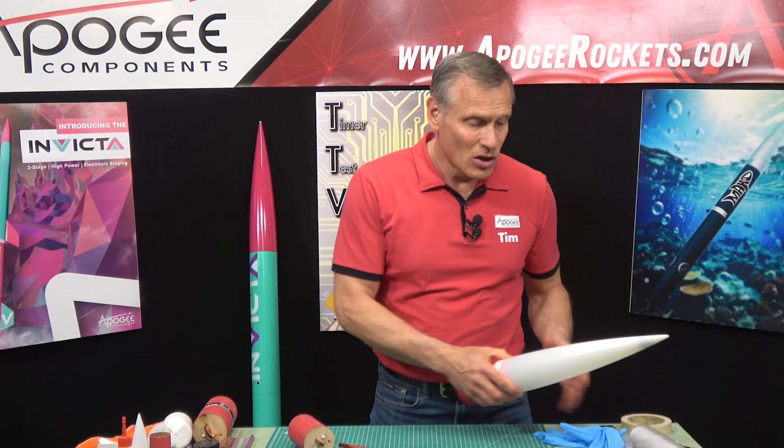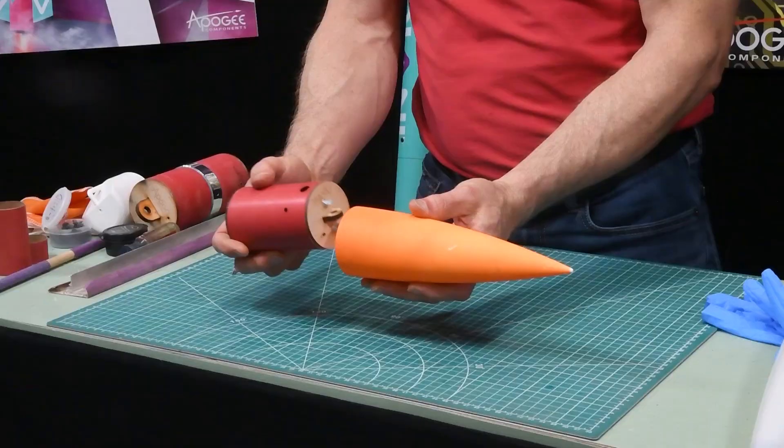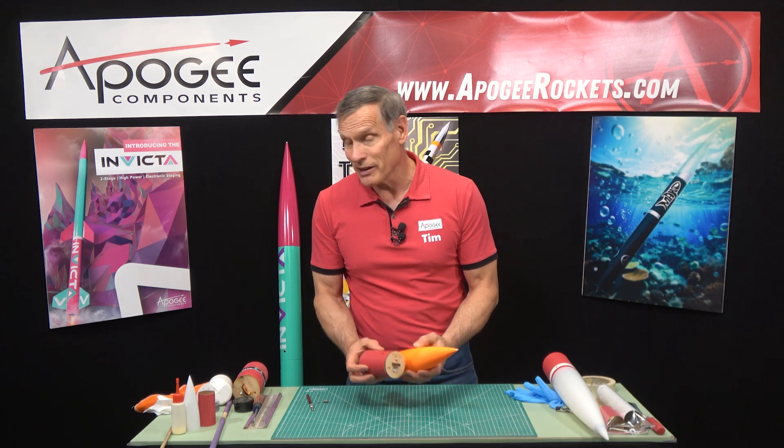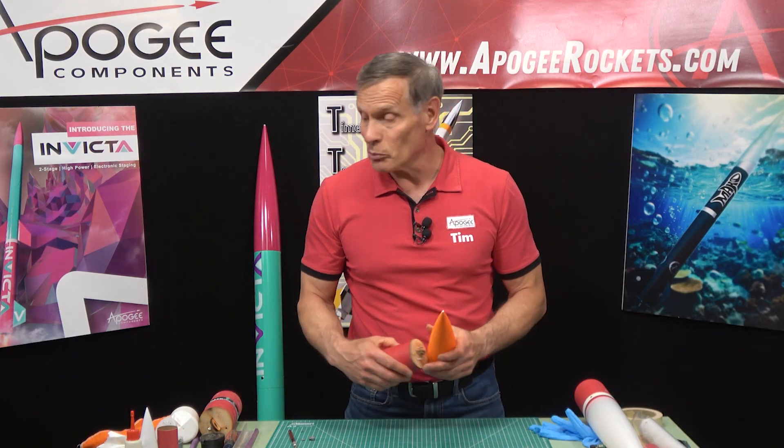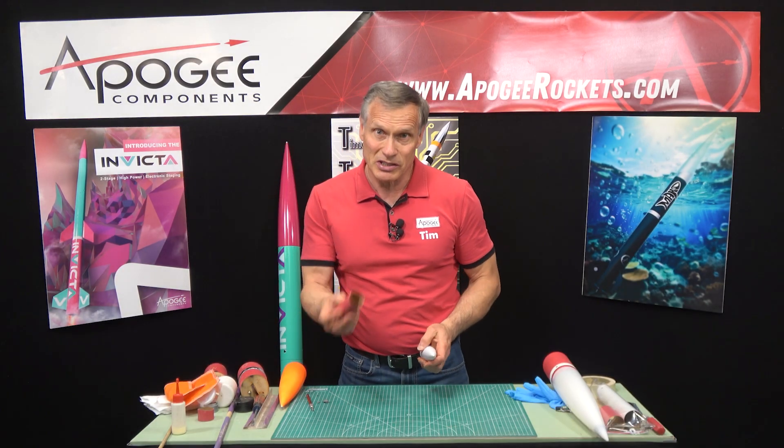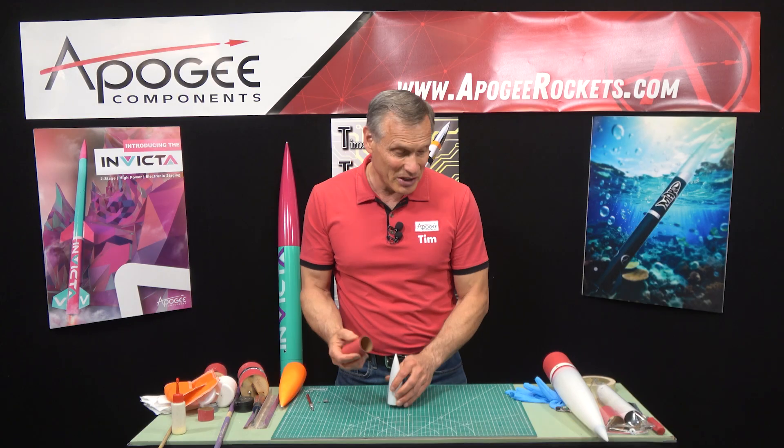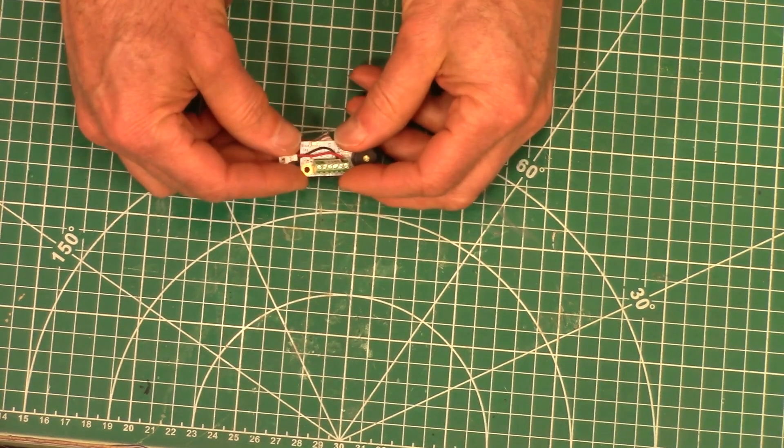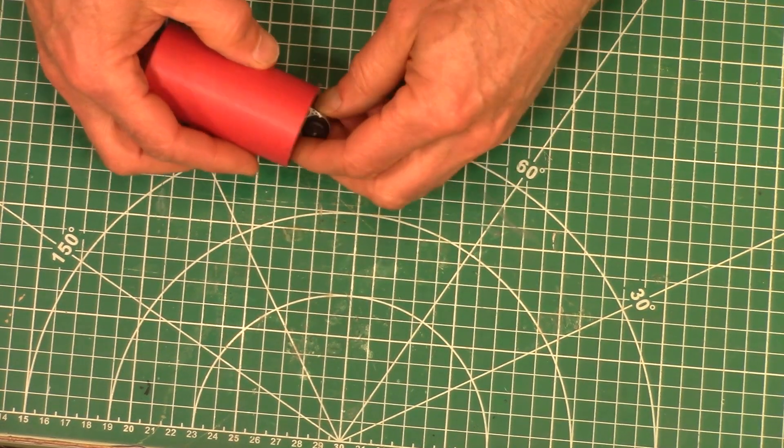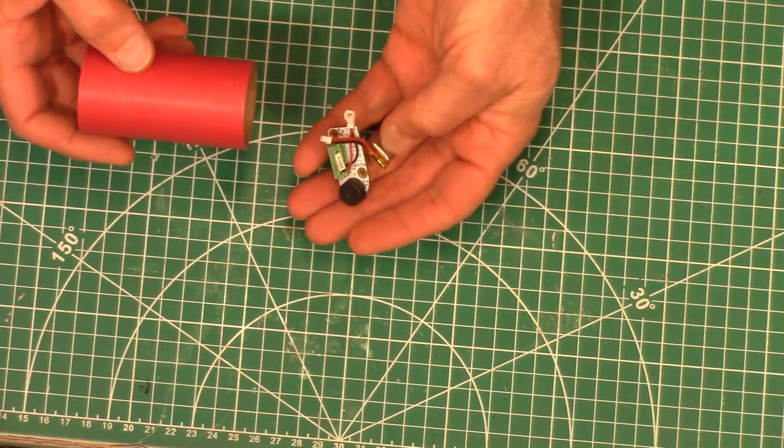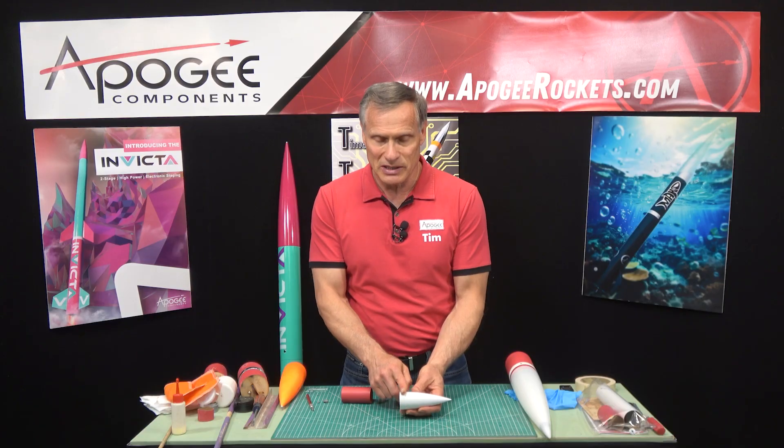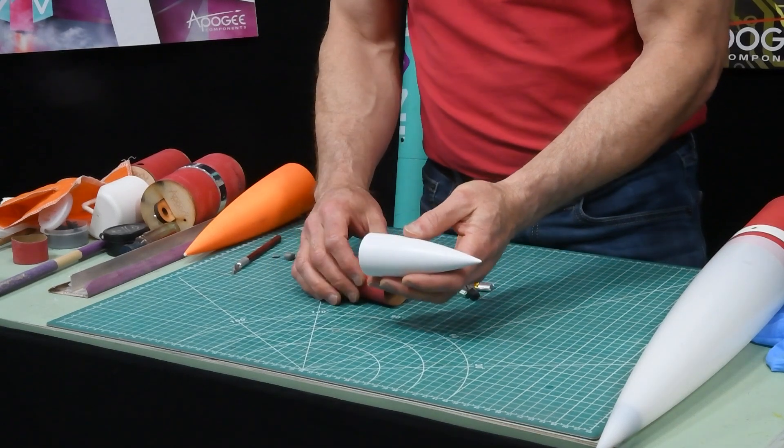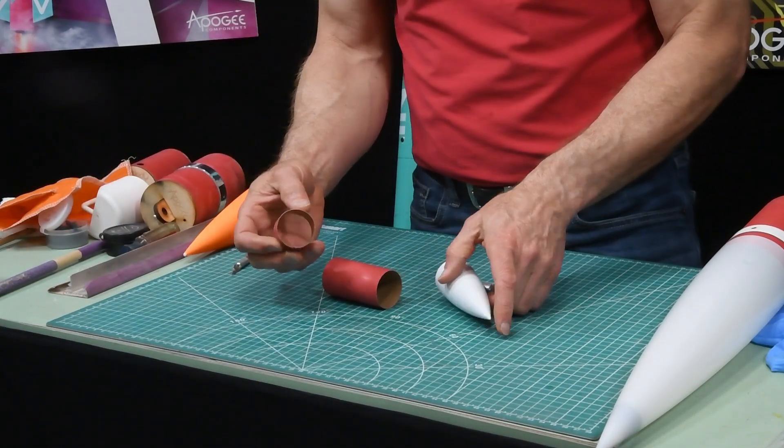The next question you might have is what if you have a nose cone and you have the ebay and it doesn't go in? Like this is never gonna go in. Can you still salvage that? And the answer is most likely you can, it's just gonna take a little bit more work. So here I have a BT60 and we do have a BT60 ebay because there are some very small dual deployment altimeters. This one right here is called the Featherweight Blue J+. It's a dual deployment altimeter and you can see there is plenty of room inside that coupler for an ebay. So again I took the nose cone, our BT60 size nose cone which is a PNC 41.6 millimeters. You can see again the coupler doesn't go in. So how do you fix that?